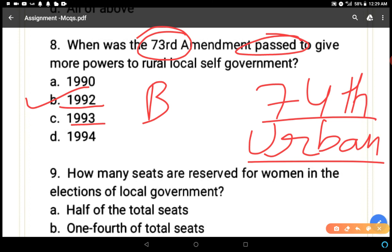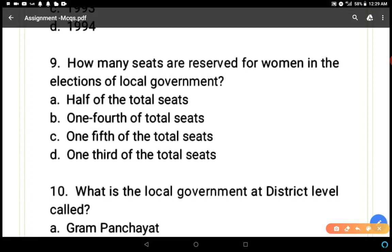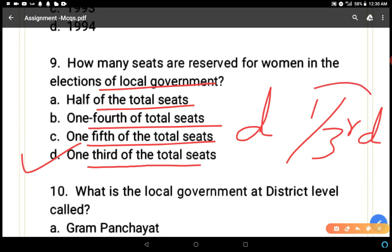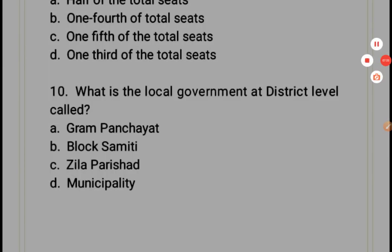Question nine: how many seats are reserved for women in elections of local government? Reservation for women exists only in panchayati raj — not in Lok Sabha, Rajya Sabha, state legislative assembly, or state legislative council. Options: half, one-fourth, one-fifth, or one-third of total seats. The correct answer is D — one-third of total seats is reserved for women according to the 73rd and 74th Amendments of the constitution.